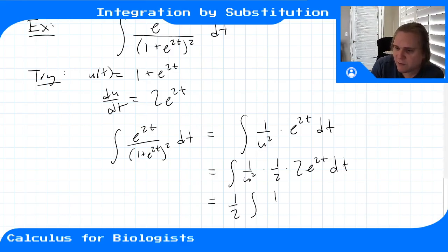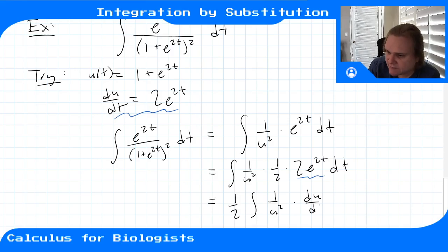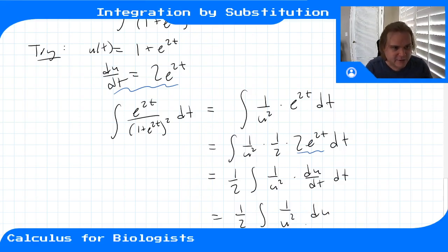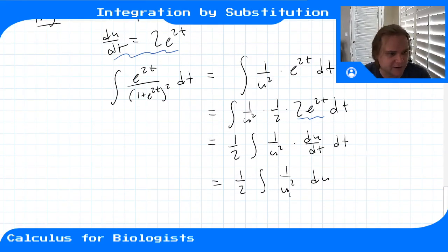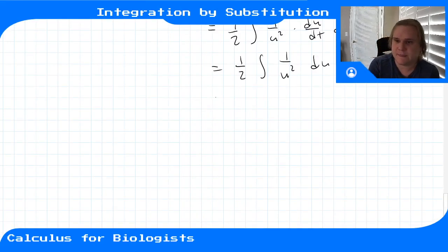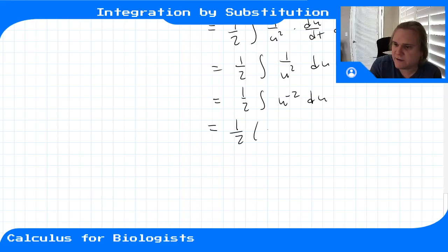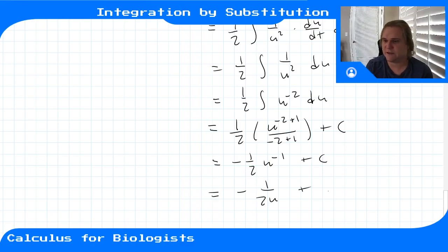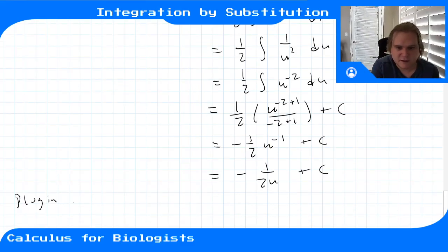We write one-half out front, and 2e to the 2t as du/dt. So the integral becomes one-half times the integral of 1 over u squared times du/dt dt. The dt's cancel, leaving one-half times the integral of 1 over u squared du. That's just the integral of u to the minus 2, so applying the power rule gives one-half times u to the minus 1 over minus 1, plus C, which equals negative 1 over 2u plus C.